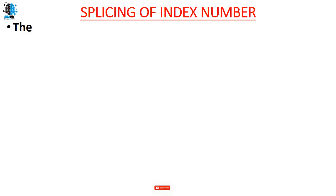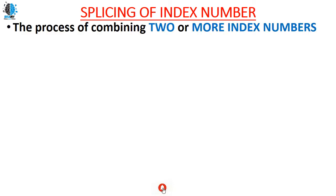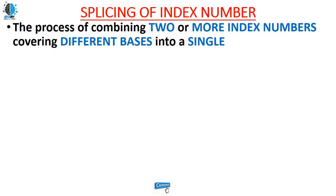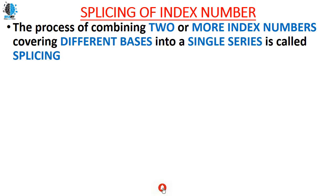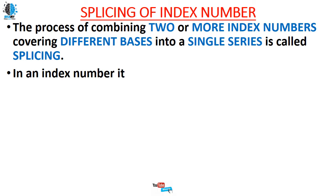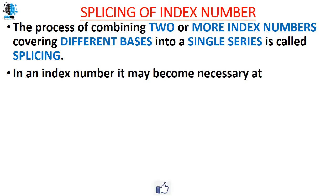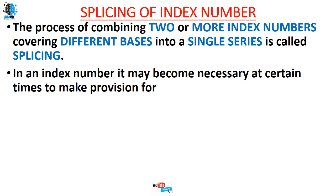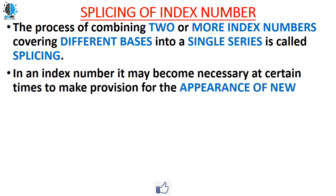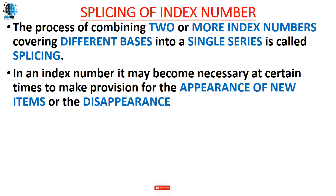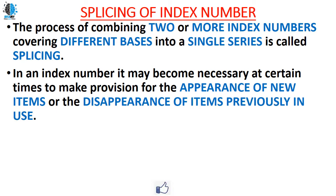Splicing in index numbers: the process of combining two or more index numbers covering different bases into a single series is called splicing. In an index number it may become necessary at certain times to make provision for the appearance of a new item or the disappearance of an existing or previously used item. Let's understand this splicing with an example.